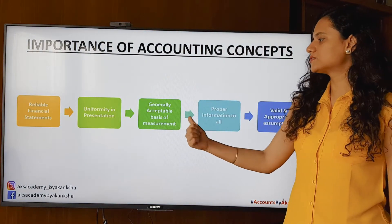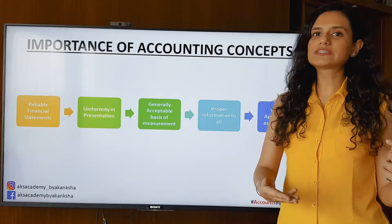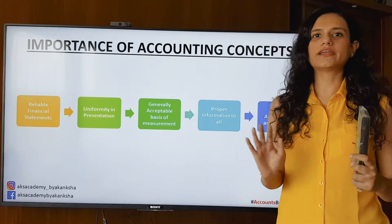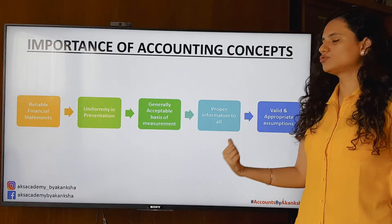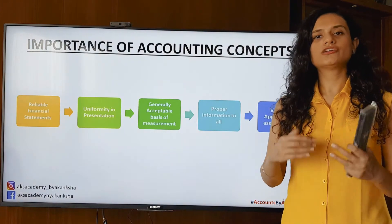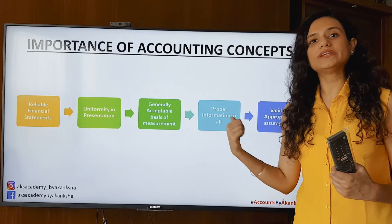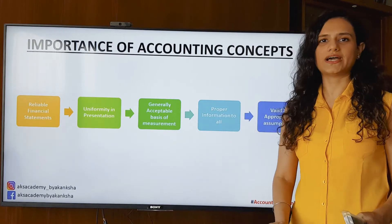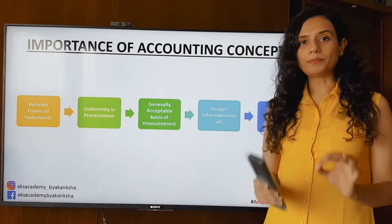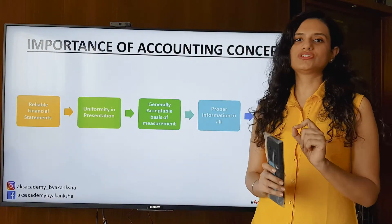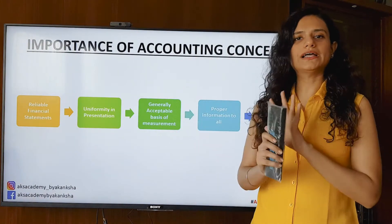Generally acceptable basis of measurement — everyone uses this as the basis of measurement. If we don't follow these rules and regulations, everyone ends up on a common page. It gives proper information to all users of accounts — those who use accounting information or refer to it — so all that information comes to them in a correct format. Valid and appropriate assumptions: only those things that are appropriate and correct have been made into assumptions in accounting concepts and conventions.